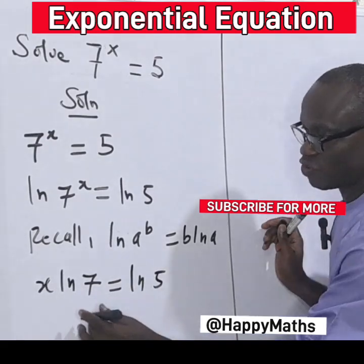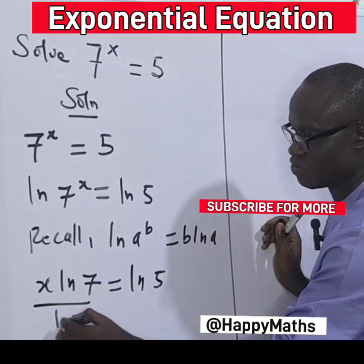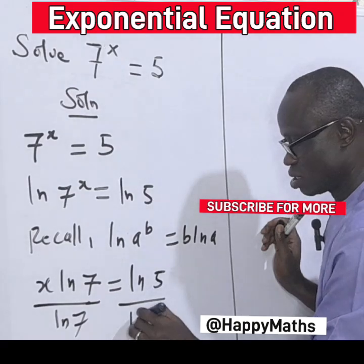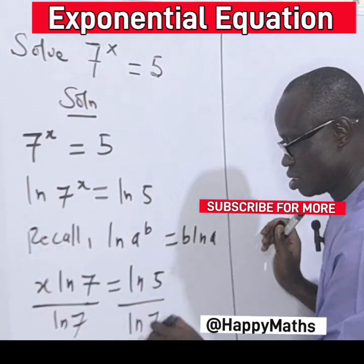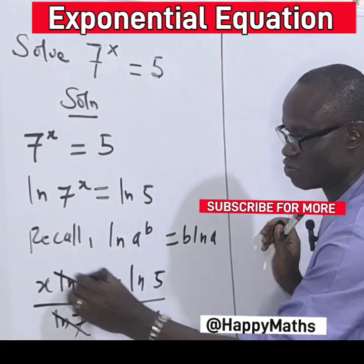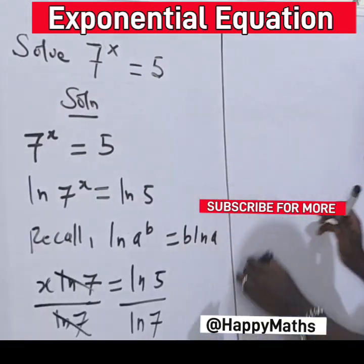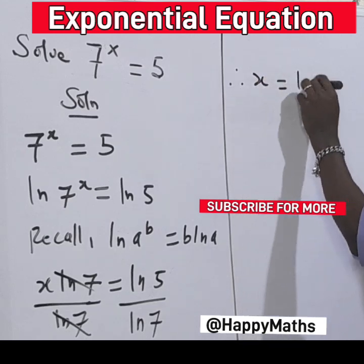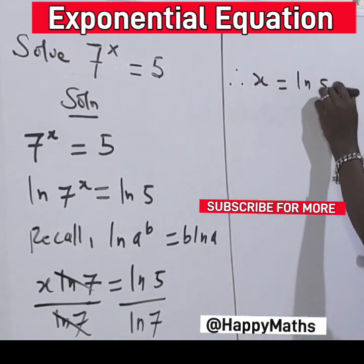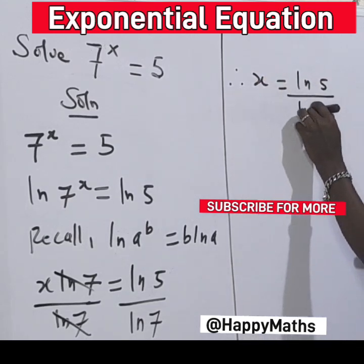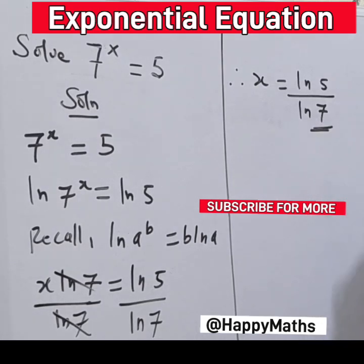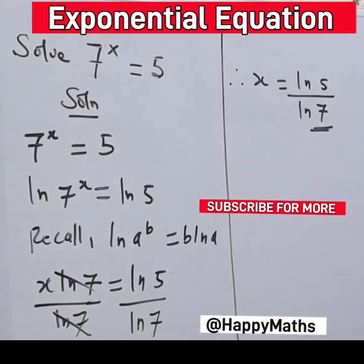We are looking for s, so let's divide both sides by ln 7. So ln 7 divided by ln 7 will cancel. Therefore, s is equal to ln 5 over ln 7. This is our final answer. Find it interesting — do wait to subscribe and follow us for more content.